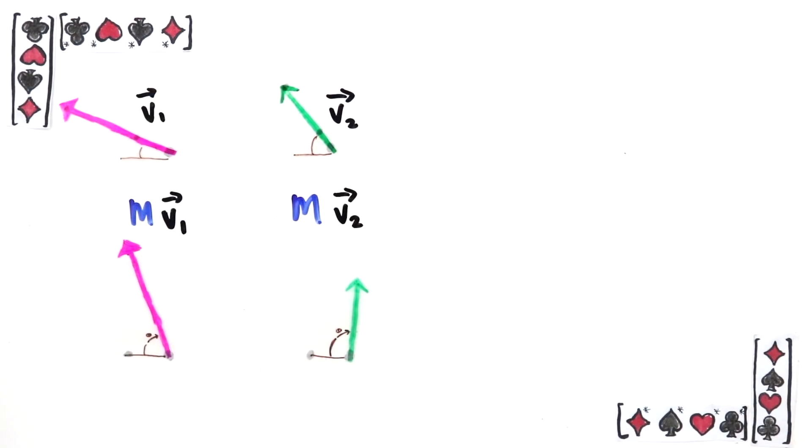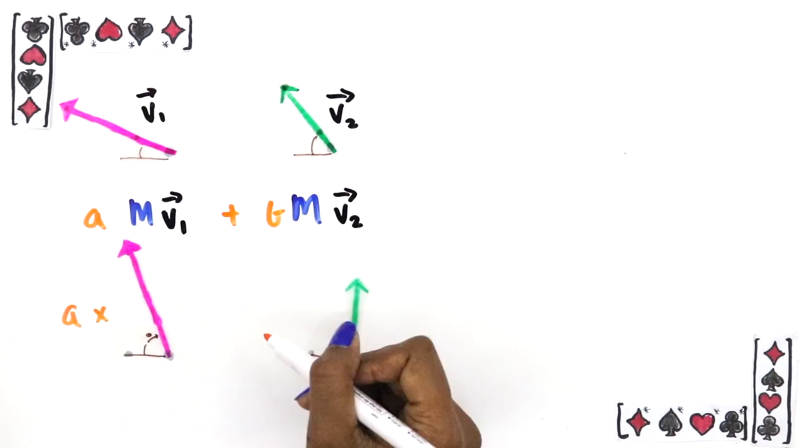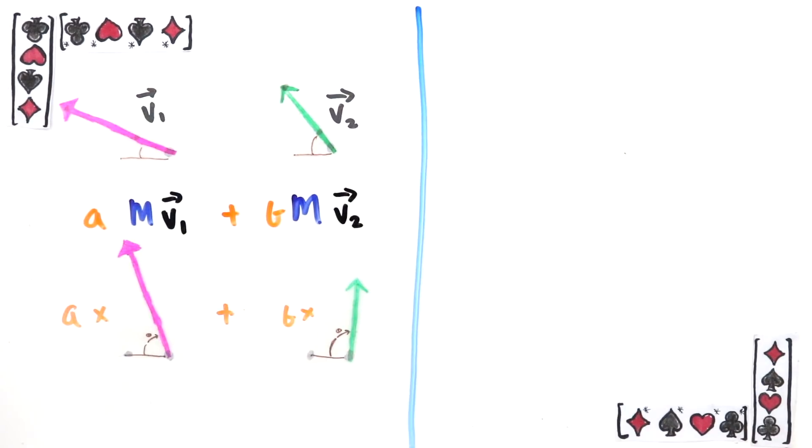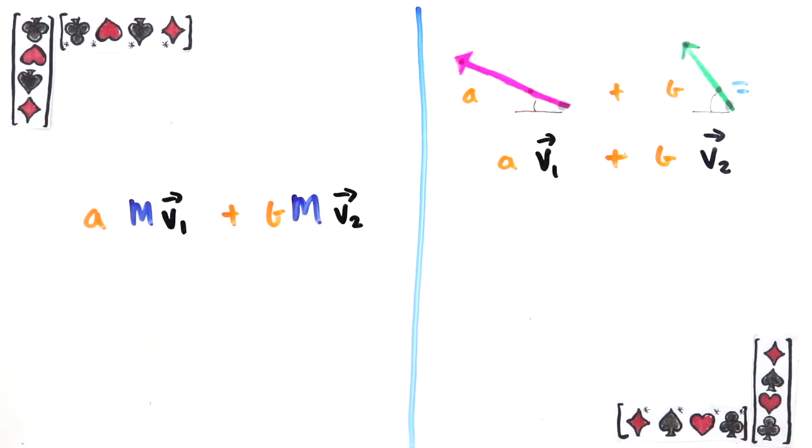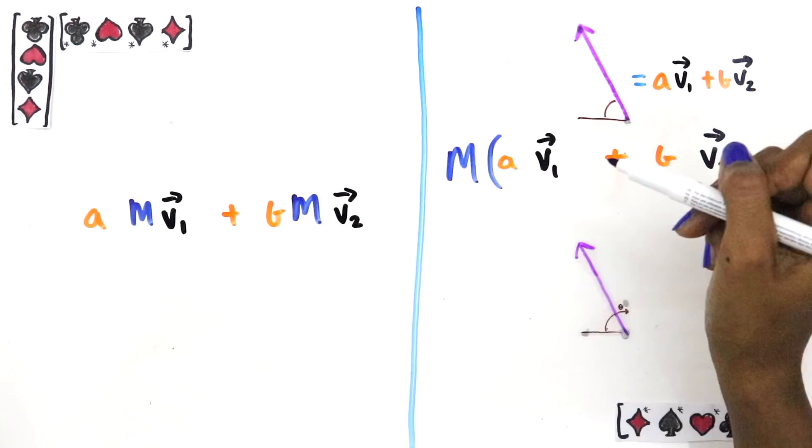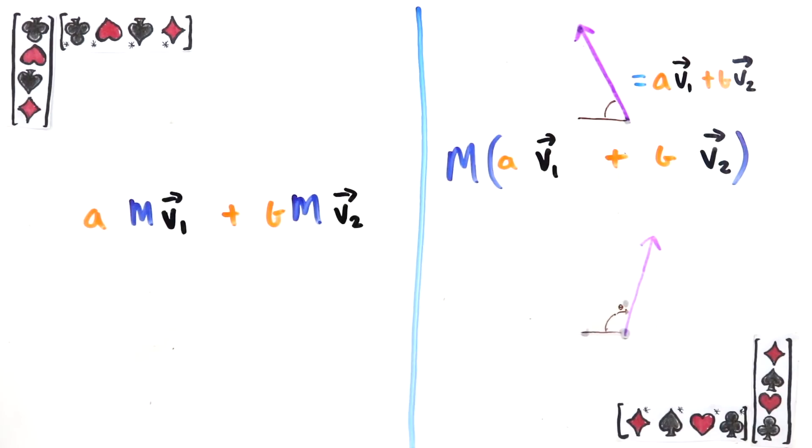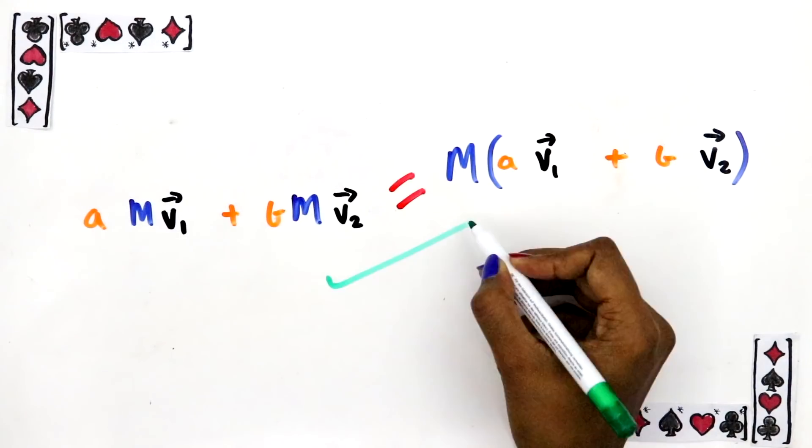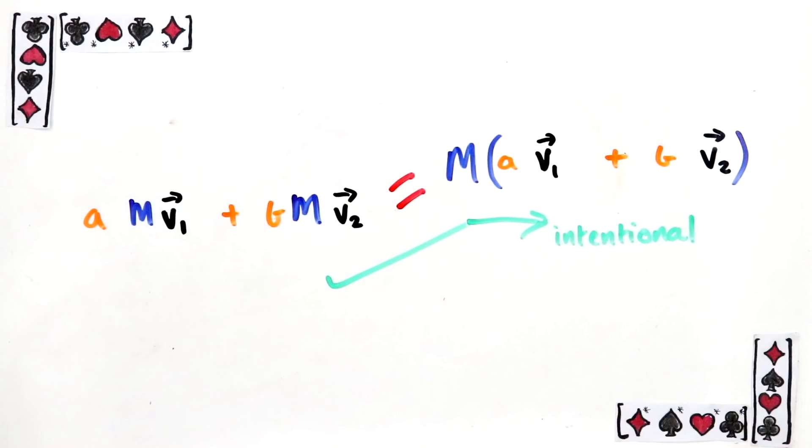Then I can make a linear combination of the result. But what if I decided to do this linear combination first, and then put the resulting vector into the matrix? A linear transformation is one when these two processes result in the same final vector. In other words, you can put your two vectors into the matrix and then take a particular linear combination of them, or you can take that linear combination of them first and then apply the matrix. Either way, you're going to get the same result.